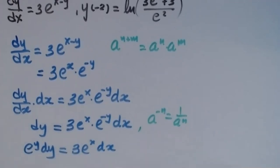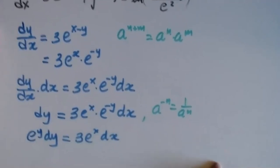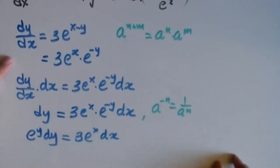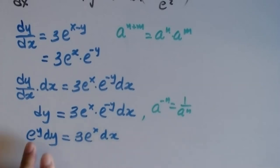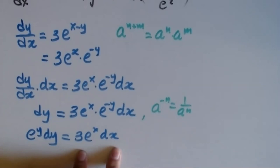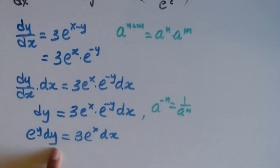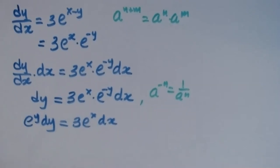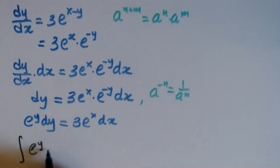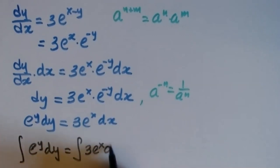Now check: all the y's are on one side and all the x's are on the other side — no mixing. The variable is inside the differential, so to resolve that I have to integrate. My calculus begins: integral of e^y dy equals integral of 3e^x dx.